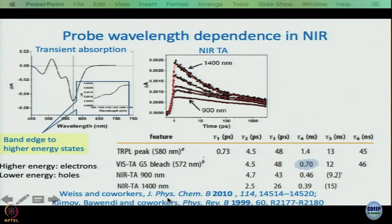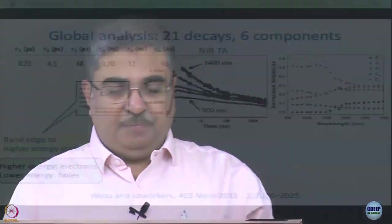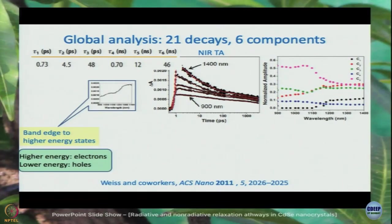From earlier work by Weiss, Klimov, and co-workers, the NIR probe transient absorption is ascribed to band-edge to higher-energy-state transitions. To understand whether electrons or holes are responsible: the higher-energy side of the NIR is dominated by electrons, and the lower-energy side by holes. Since the signal grows at lower energies, this seems to be mostly a hole contribution.